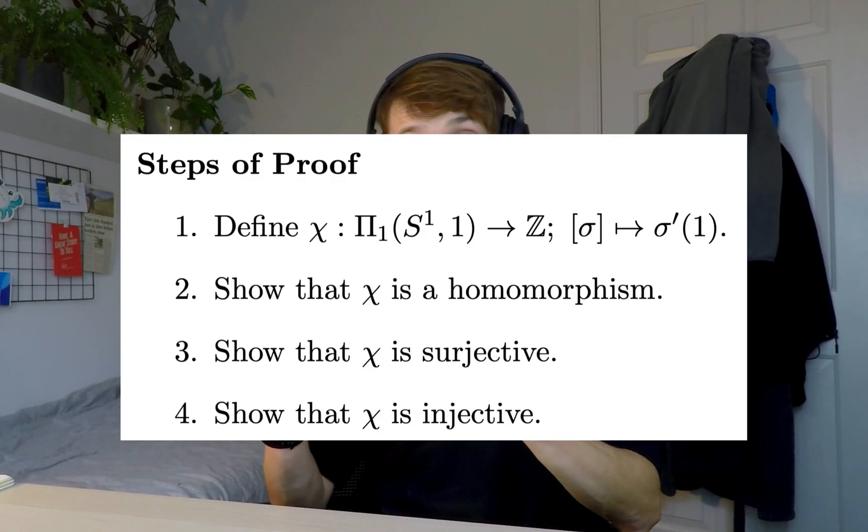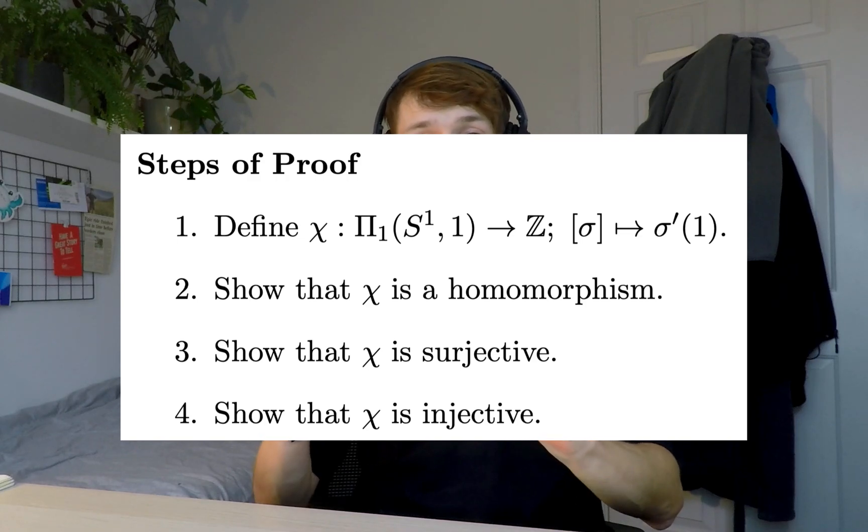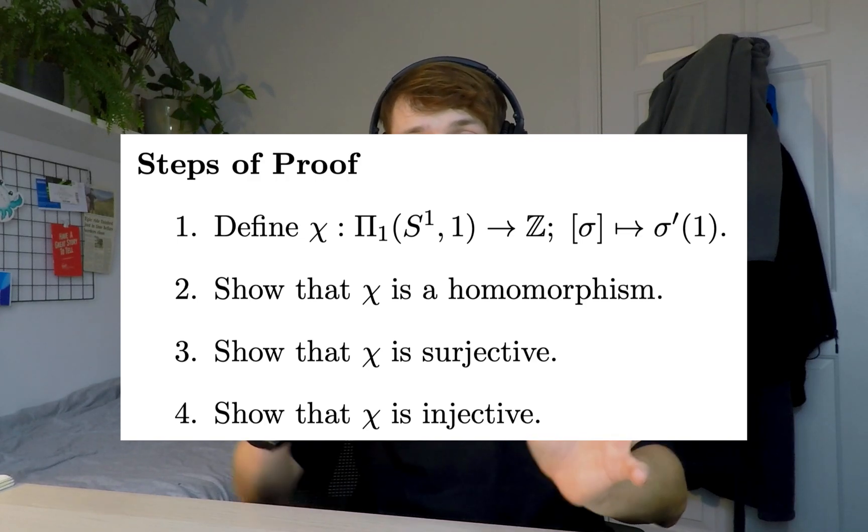What I recommend doing for long proofs is first understanding them completely. Make sure you understand everything — if you don't understand it, don't put it on Anki. Then break it down into key steps. For this one I've broken it down into four key steps and I'm going to use those in Anki.